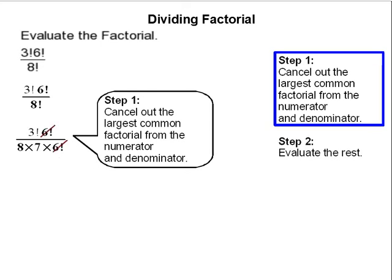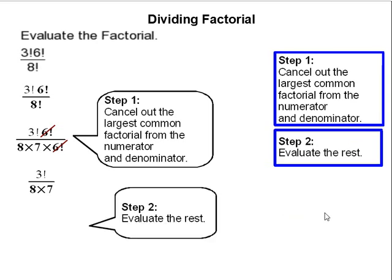We are going to cancel those out. Then, the final step is just to evaluate the rest. 3 factorial is 6, and 8 times 7 is 56. We reduce that and get 3 over 28. That completes our problem.